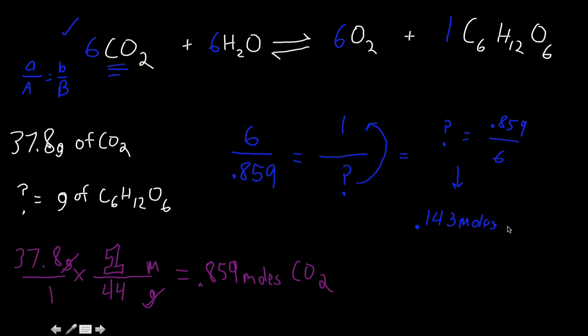.143 moles of glucose, C6H12O6. So, but it wants the answer in grams, so what do I have to do? Well, I have to convert that moles to grams. So I'm going to go ahead and plug that in, .143 moles over 1 times the molar mass of glucose, which is sad that I know this, but it's about 180. So I'm going to make sure that my moles cancel out, and then I multiply that by 180, and I get about 26 grams. I'm rounding that to 3 sig figs.